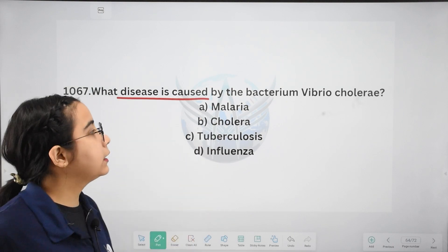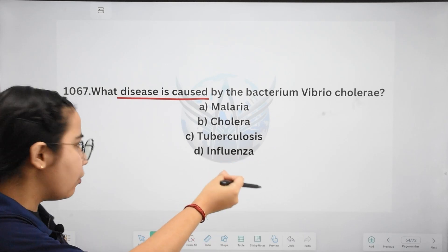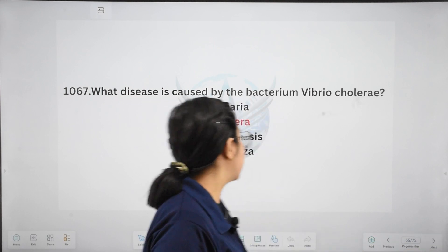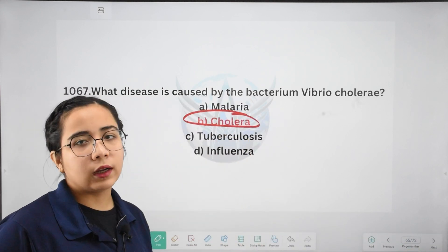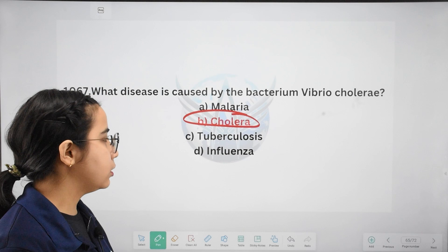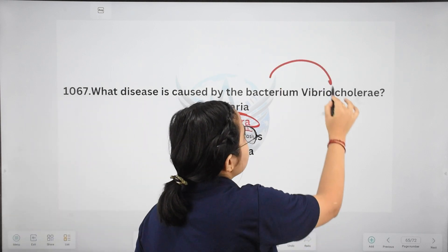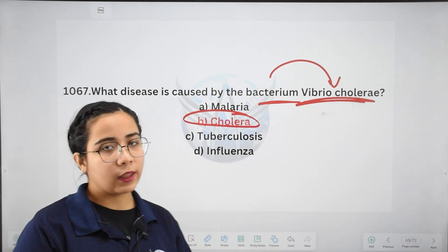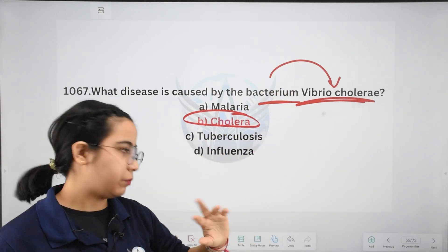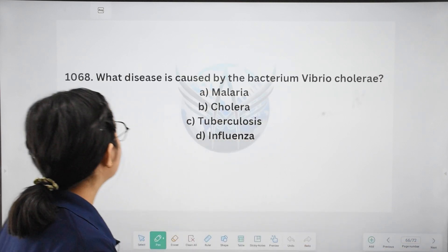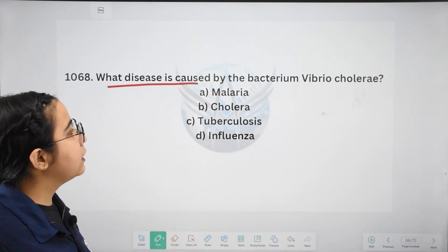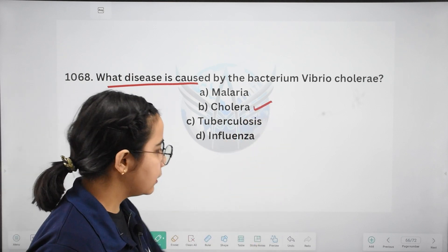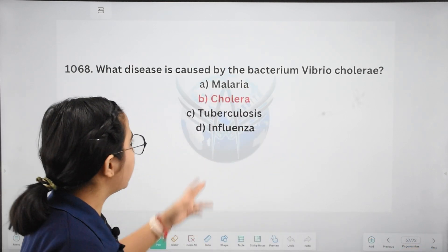Next: which disease is caused by the bacterium Vibrio cholerae? The answer is written in the name — it is cholera. Options: malaria, cholera, tuberculosis, or influenza. The right answer is cholera. Vibrio cholerae is the main reason for cholera. Note: the next question appeared to be a repetition of this one, so the answer is again cholera.